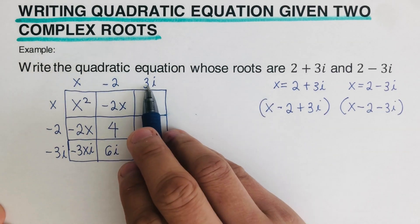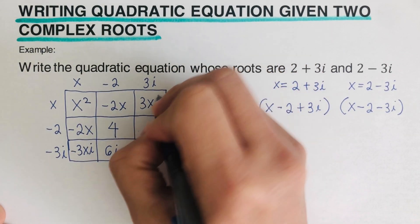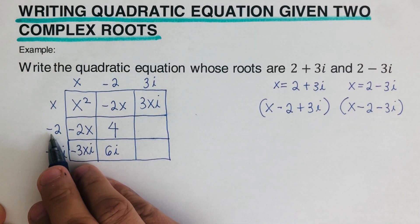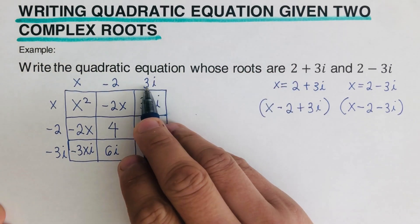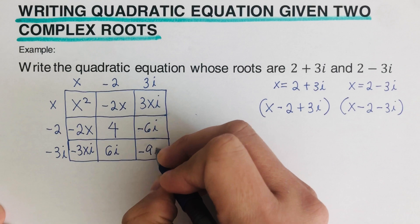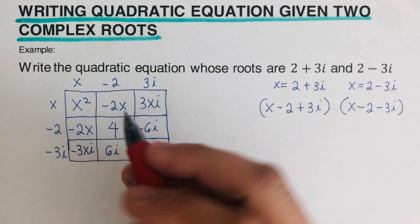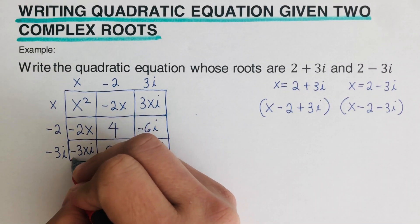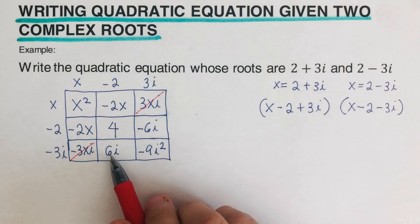Continuing: 3i times x is positive 3xi; 3i times negative two is negative 6i; and 3i times negative 3i is negative 9i squared. Notice the −3xi and +3xi terms cancel each other out.